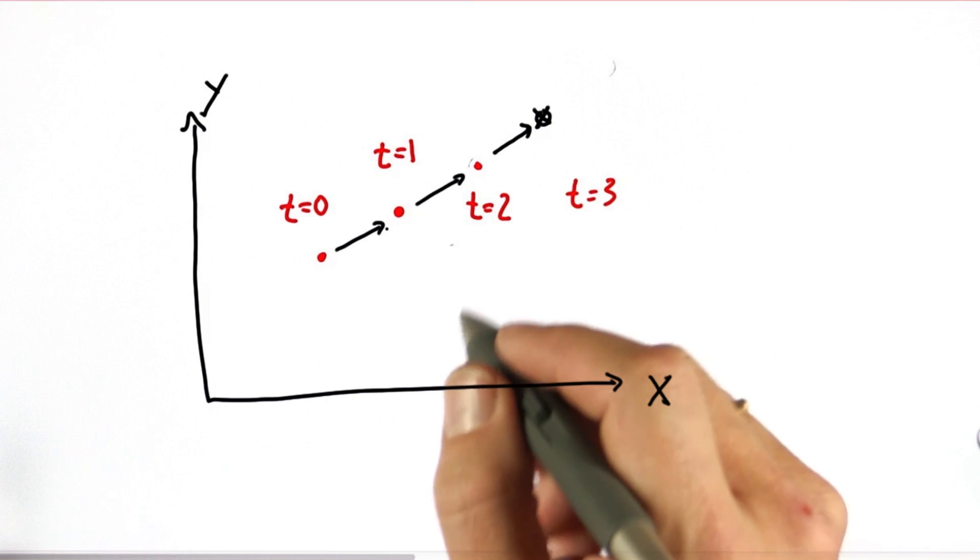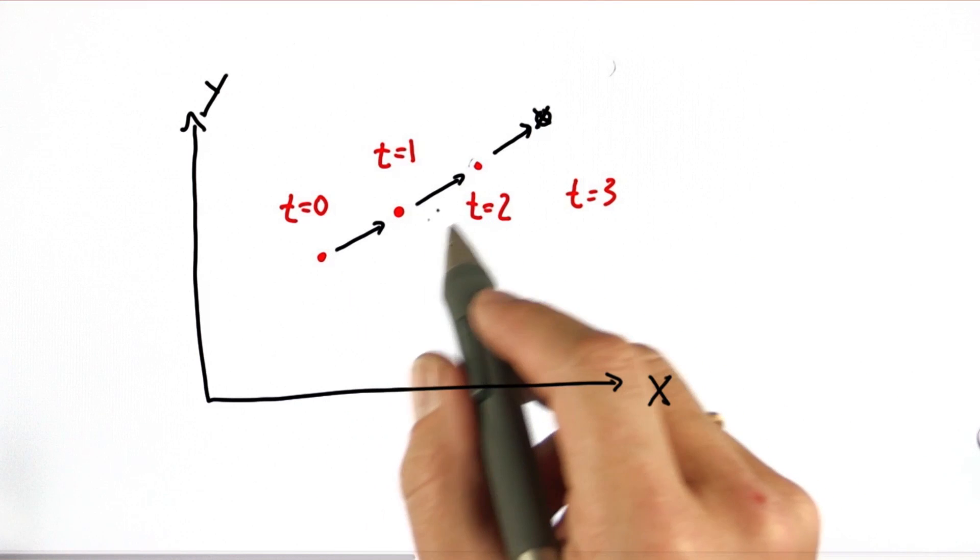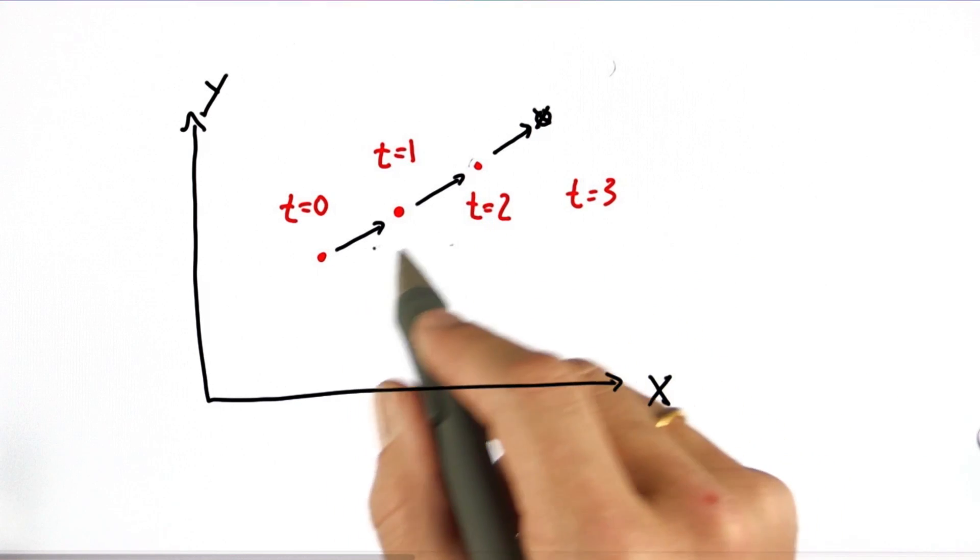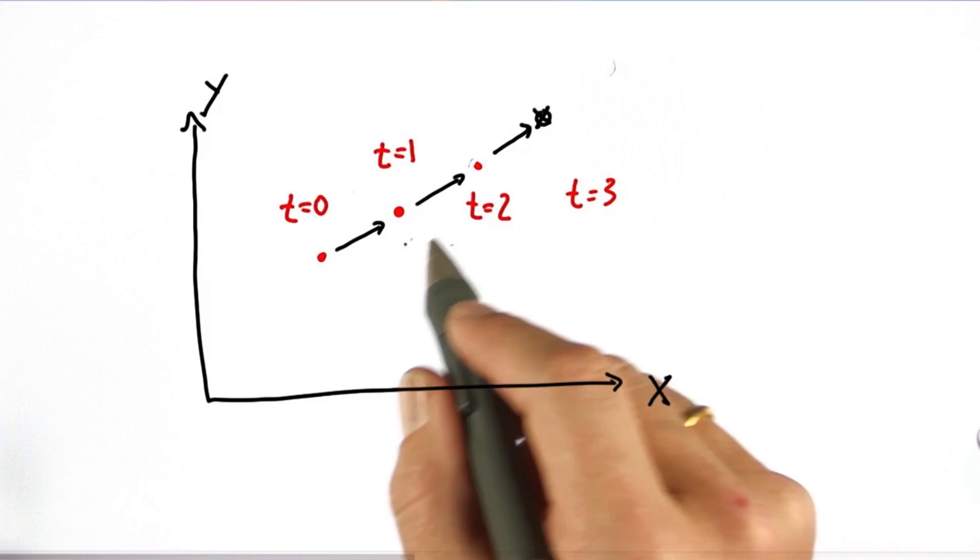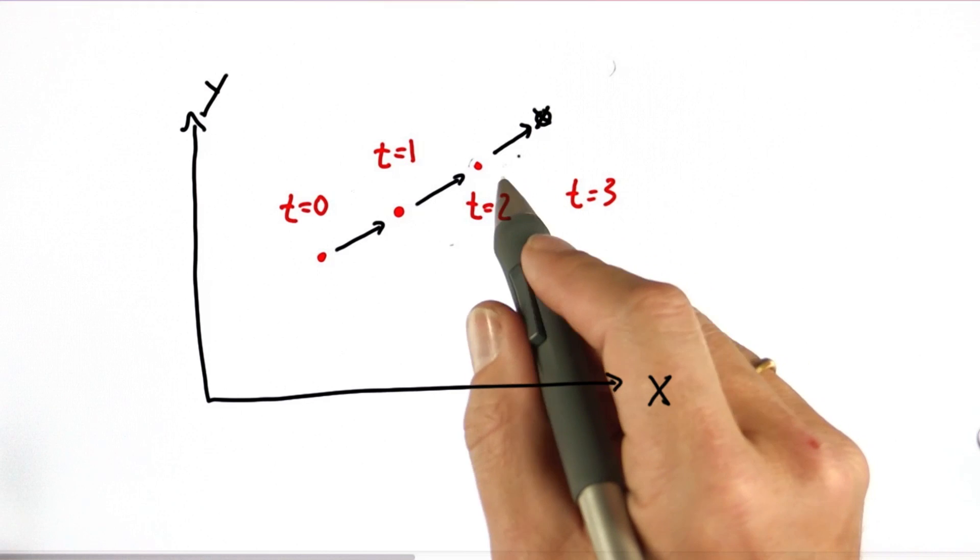So one of the most amazing things about Kalman filters in tracking applications is that it's able to figure out, even though it never directly measures it, the velocity of the object, and from there is able to make predictions about future locations that incorporate velocity.